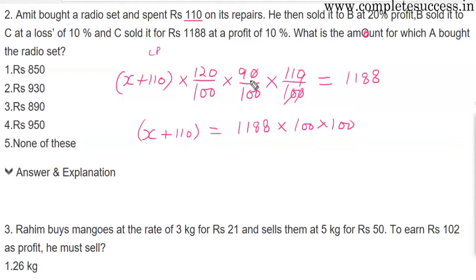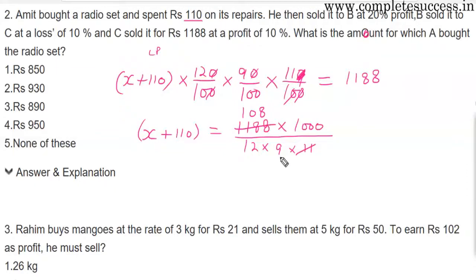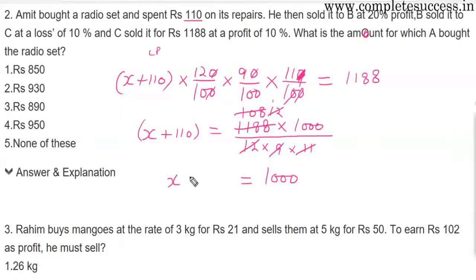Solving the equation: 1188 divided by 11 gives 108, divided by 9 gives 12, divided by 12 gives 1. So we get 1000 equals x plus 110. Therefore x equals 1000 minus 110, which is 890. The answer is the third option.